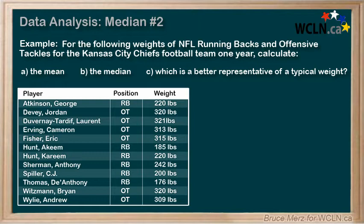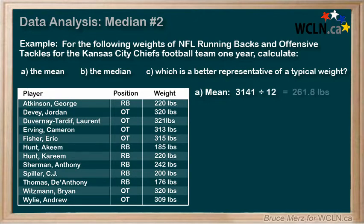To calculate the mean weight, you just add up all of the weights and then divide by how many numbers there are, which is 12. When we do that, we get a total weight of 3141 pounds — that's a lot! When we divide by 12, we get a mean weight of approximately 261.8 pounds.